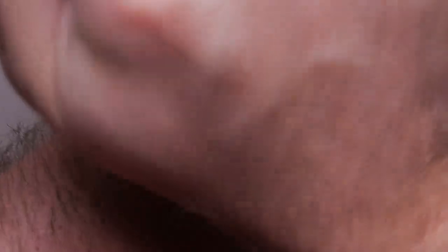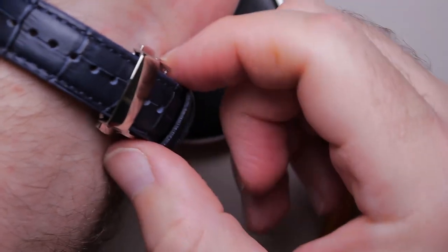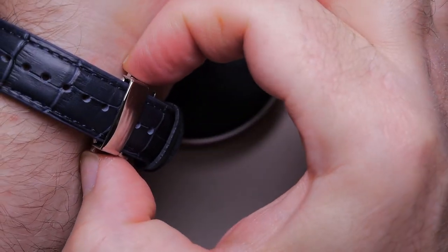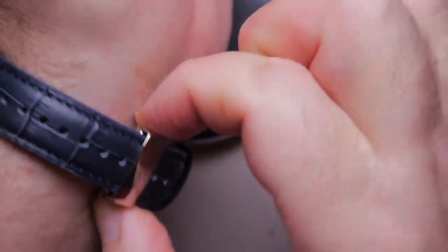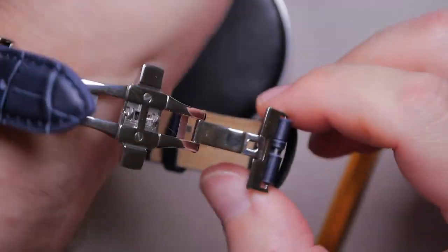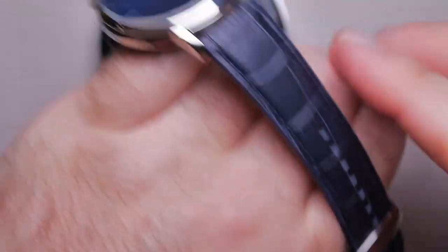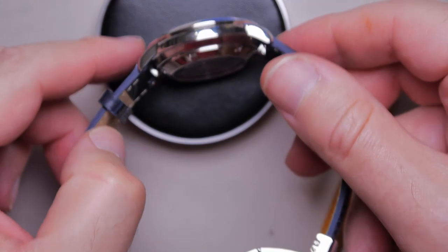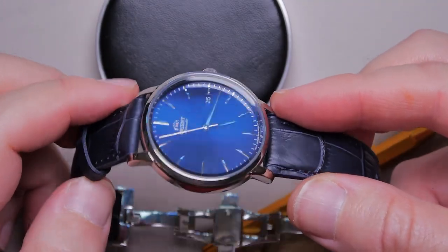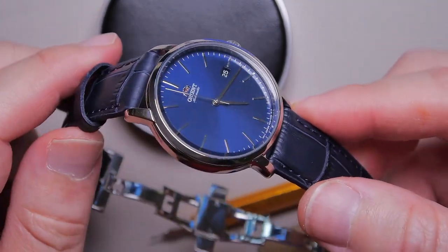A little smudgy smudge there. Love it. And then to take it off, you got your two little quick releases here. Don't doink. Super easy to put on and off now. I love clasps. I hate buckles. I will definitely be converting the rest of my watches.